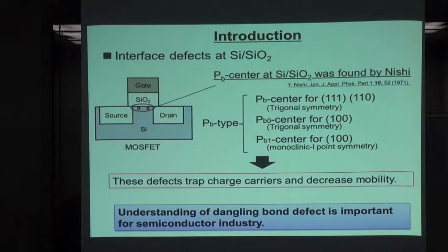In 1971, the dangling bond was found by Professor Nishi's group at the Silicon-Silicon Dioxide Interface using EPR. After this report, there are many kinds of Pb-type centers reported, such as Pb center for 111 and 110 interface, and Pb0 center for 100 interface, and Pb1 center for 100 interface.